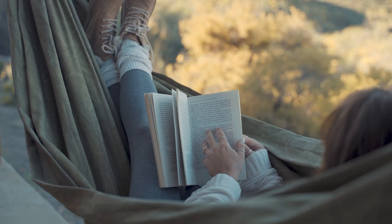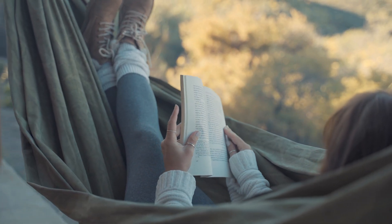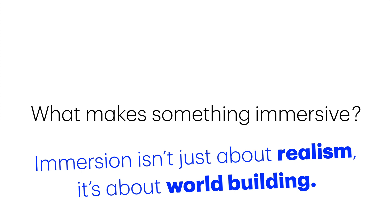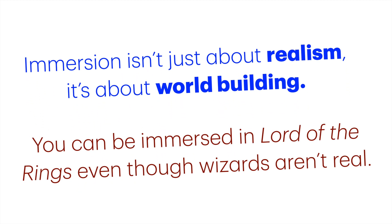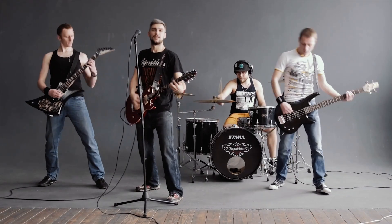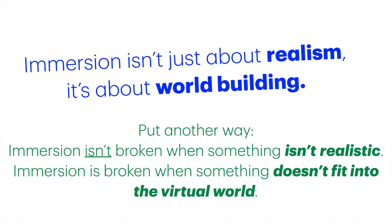While the book isn't necessarily immersing our senses, it's taken over our perceptual apparatus. So what makes something immersive? Maybe one answer is immersion isn't about creating a realistic experience — it's about creating this immersive world, this other place that can take over our senses. You can be immersed in Lord of the Rings, even though wizards aren't real. Put another way, immersion isn't broken when something isn't realistic. Immersion is broken when something doesn't fit into the virtual world — a wrong note in a recording, or a plot hole in a book.